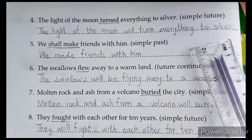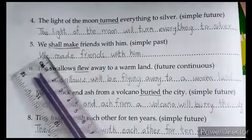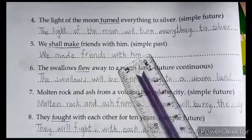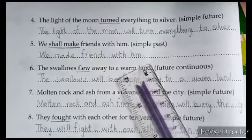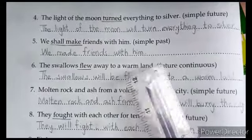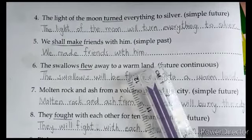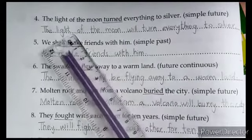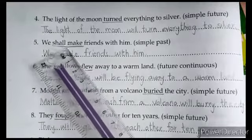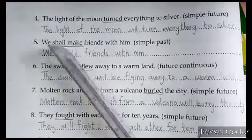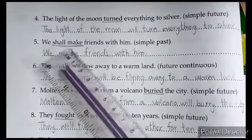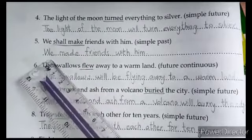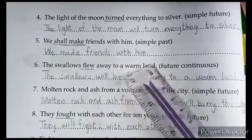Next sentence: 'We shall make friends with him' — change to simple past. In simple past, you use the second form of the verb and don't use any helping verb. 'Make' becomes 'made': 'We made friends with him.'